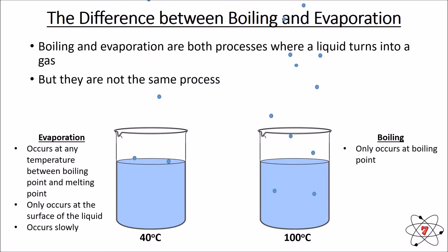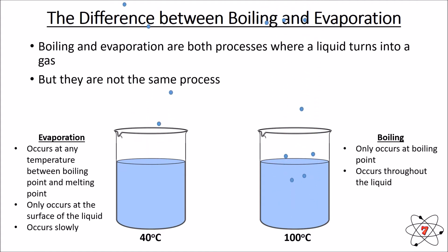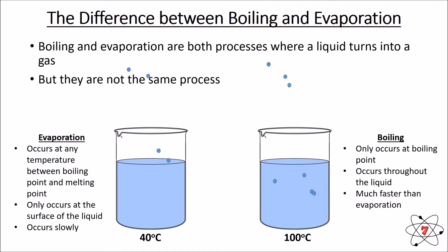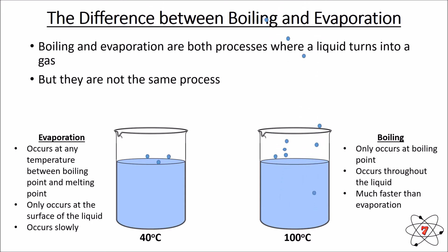Boiling is very different. It only occurs at the boiling point — for water this is exactly 100 degrees Celsius — and it occurs throughout the liquid. Particles turn to gas anywhere in the liquid during boiling, whereas during evaporation particles can only turn to gas at the surface. Boiling is much faster than evaporation because particles have more energy, making it much easier for them to overcome the intermolecular forces and escape to become gas particles.